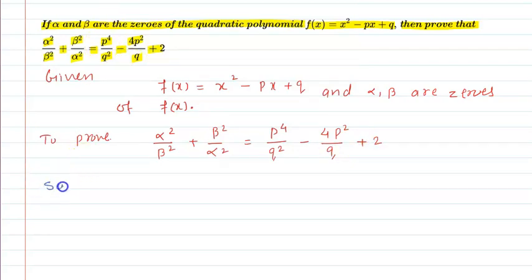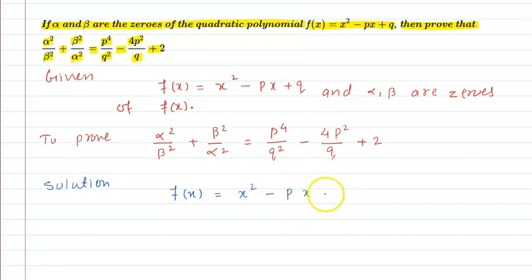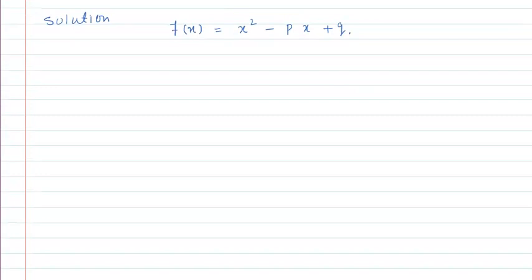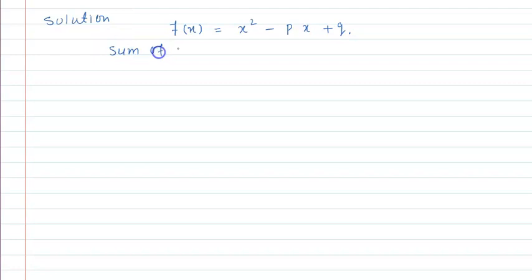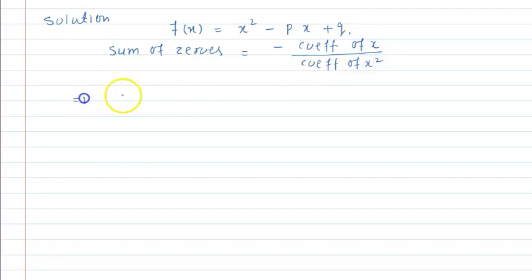Let us see the solution part of this question. हमें यहाँ जो quadratic polynomial दे रखा है उसे लिख दिया: f(x) = x² - px + q. इसके दो zeros दे रखे हैं alpha और beta. तो यहाँ sum of zeros निकालेंगे. Sum of zeros = minus coefficient of x upon coefficient of x². So alpha + beta = -(-p)/1 = p.